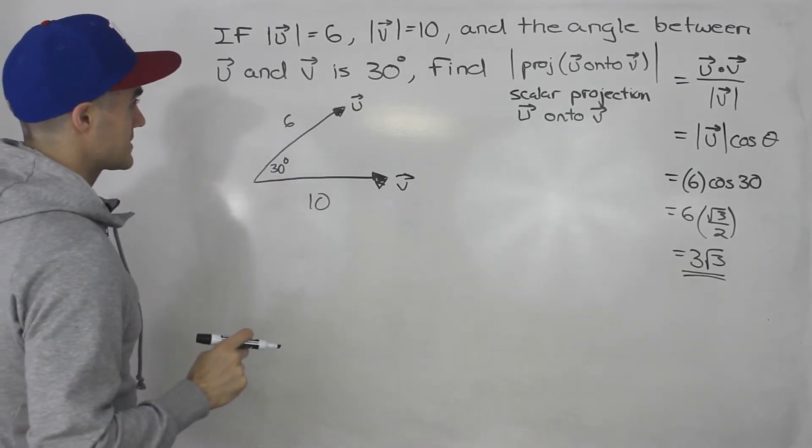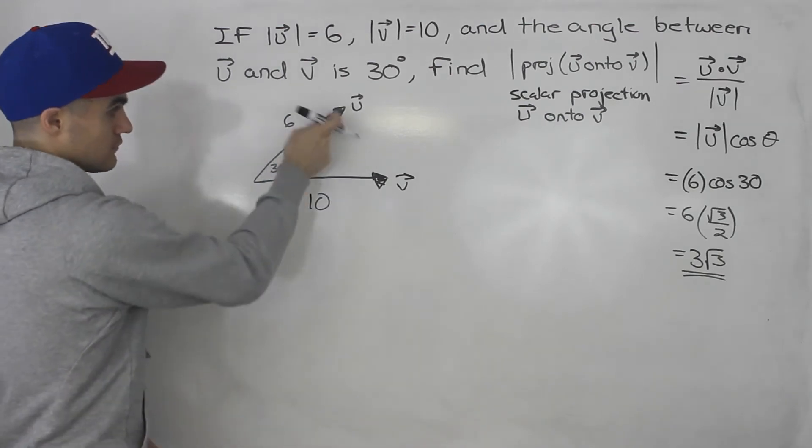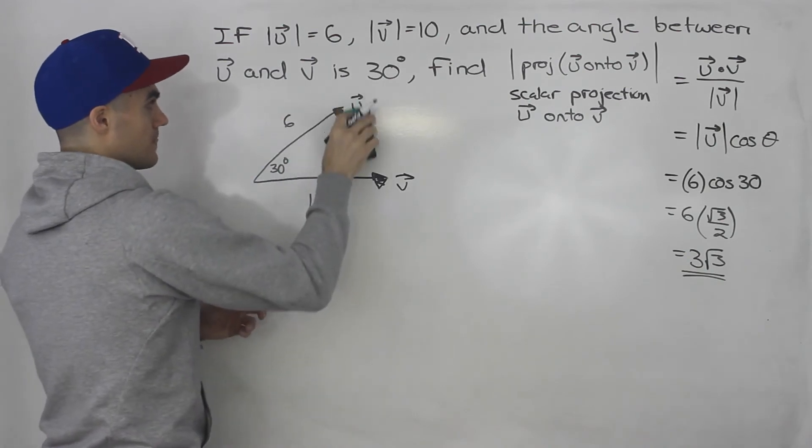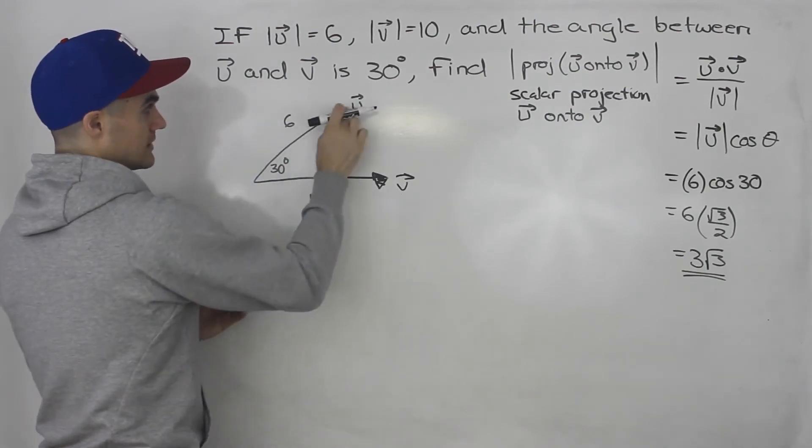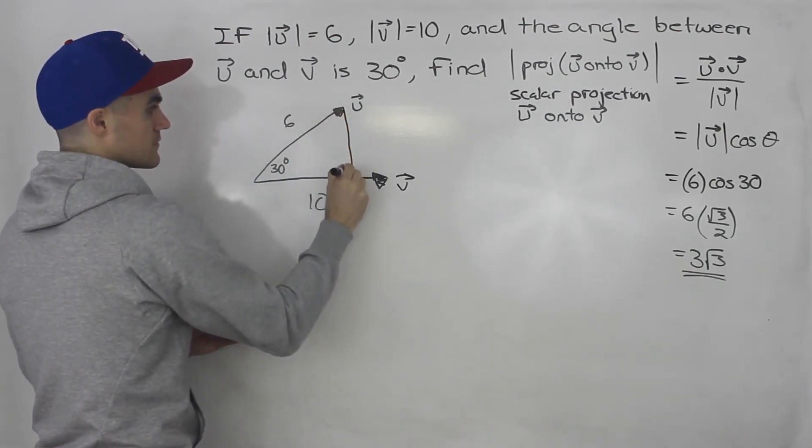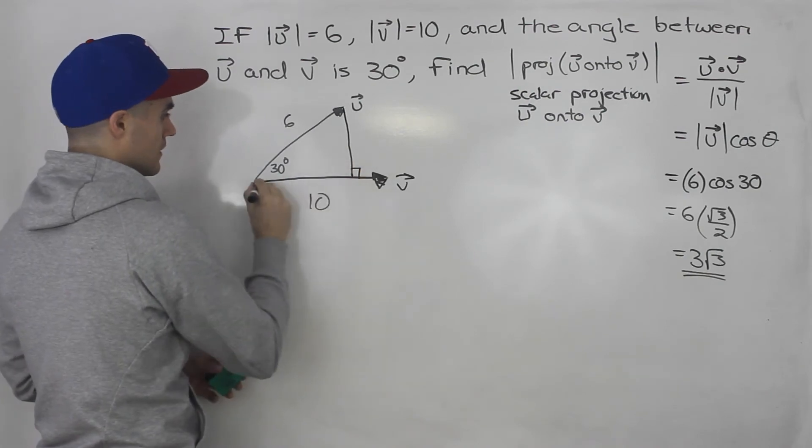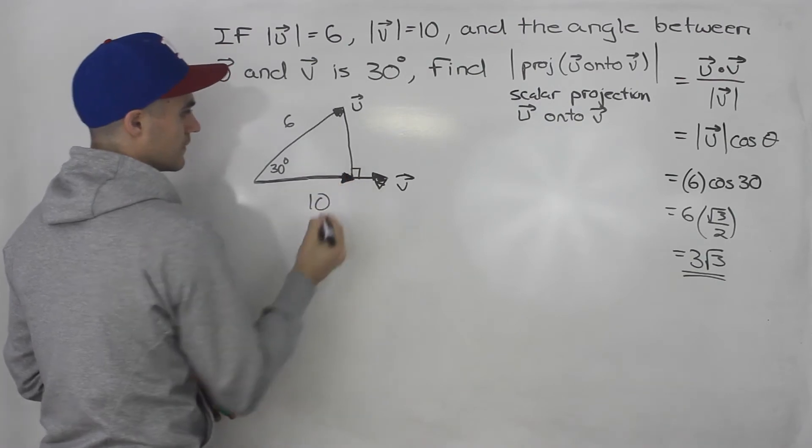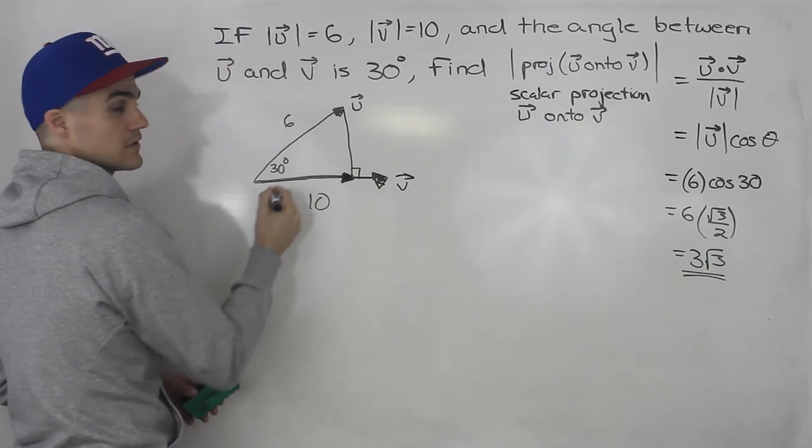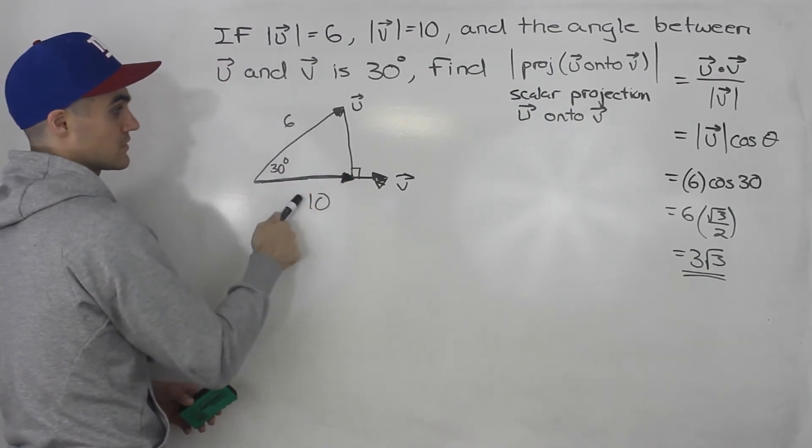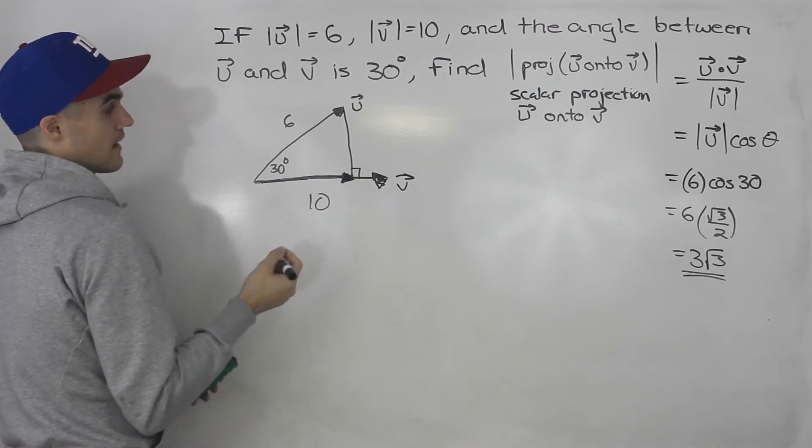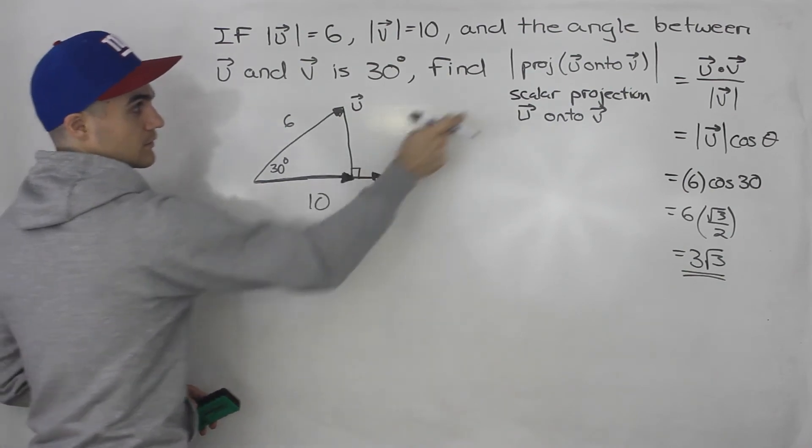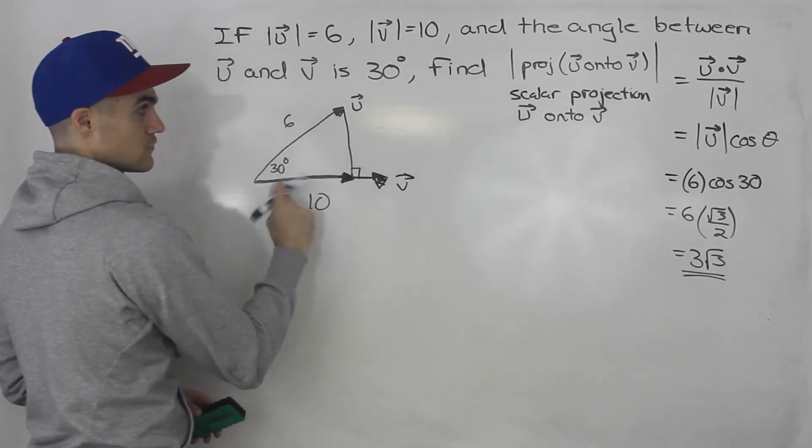And the angle in between them is 30 degrees. So when they're asking for the projection of u onto v, they're basically asking, you have to draw a straight line down from u to v. So this is perpendicular here, they're basically asking for this vector here up to that point. So this vector here would be the projection of u onto v. Well, they're not asking for that vector, they're asking for the magnitude of that vector. The scalar projection of u onto v.